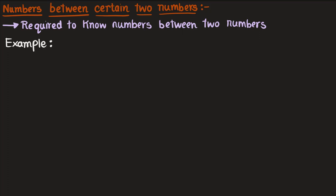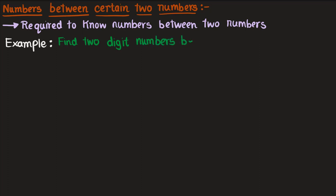Our next concept is numbers between certain two numbers. This topic requires finding how many numbers of a given type exist between two numbers. For example, a common exam question is: how many two-digit numbers are there between one and one hundred? You need to remember that there are ninety two-digit numbers.